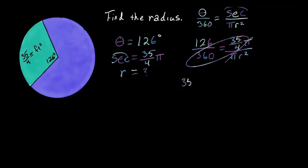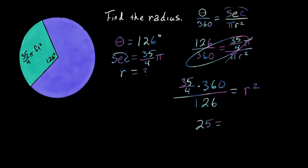35 over 4 times 360 divided by 126 is equal to radius squared. 25 is equal to radius squared. Because we want just the radius, we need to take the square root of r squared and 25. The radius is equal to 5.